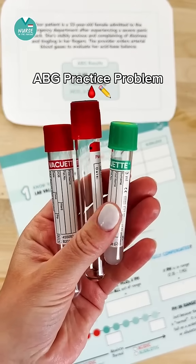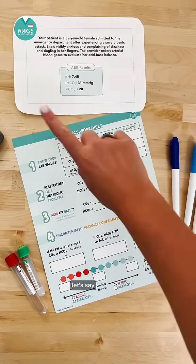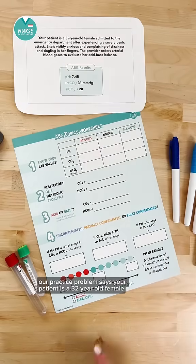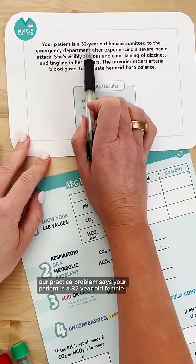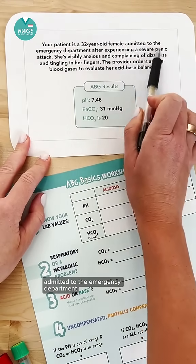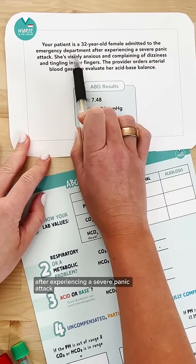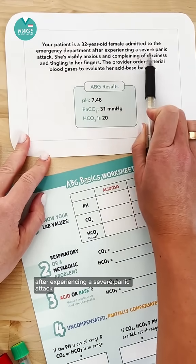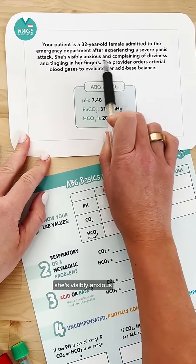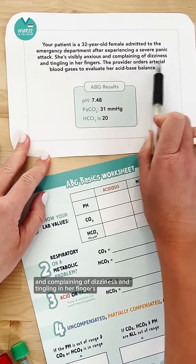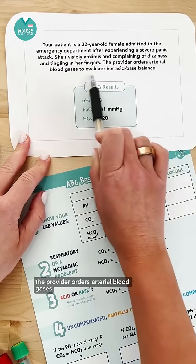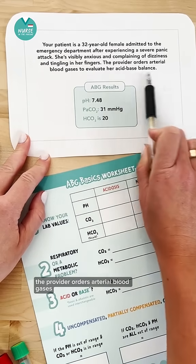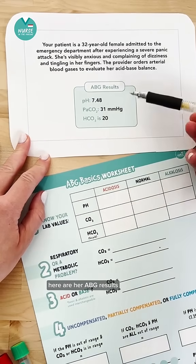Let's do an ABG practice problem. Your patient is a 32-year-old female admitted to the emergency department after experiencing a severe panic attack. She's visibly anxious and complaining of dizziness and tingling in her fingers. The provider orders arterial blood gases. Here are her ABG results.